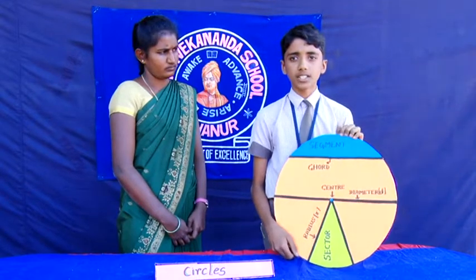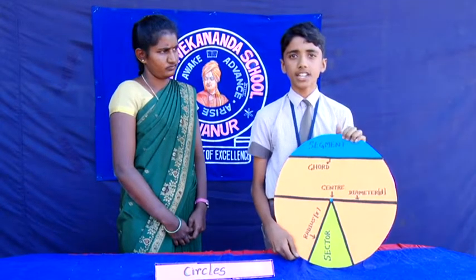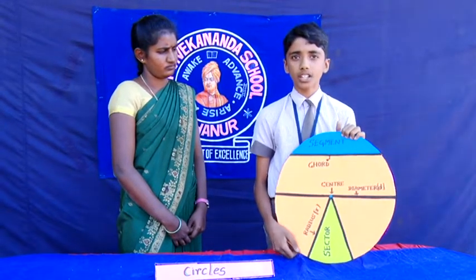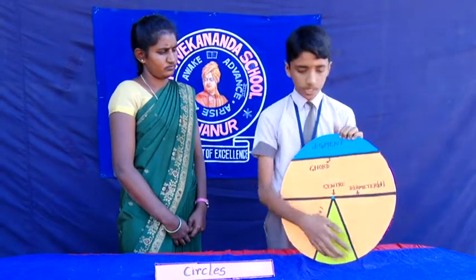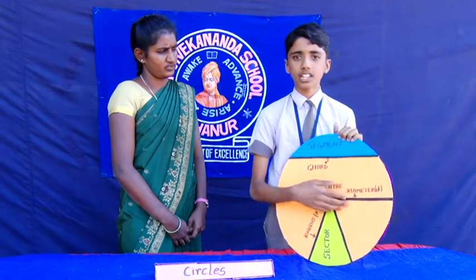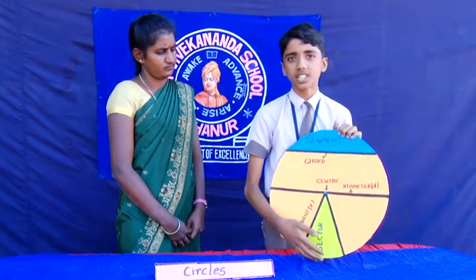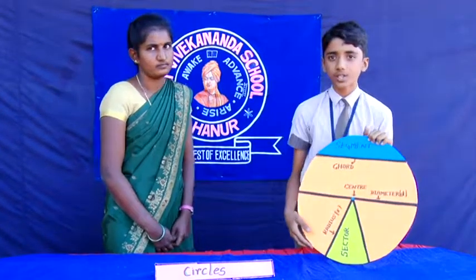Area of a circle: A = πr². Semi-circle: half of the circle is known as the semi-circle. Thank you.